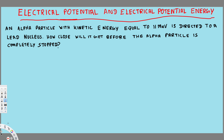Hey, what's going on guys? Let's do this problem right here. The question is asking: an alpha particle with kinetic energy equal to 11 million electron volts is directed to a lead nucleus. How close will it get before the alpha particle is completely stopped? So we have a nucleus right here and the alpha particle right here.